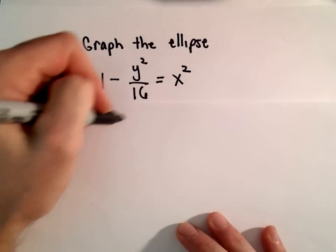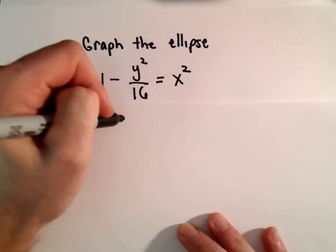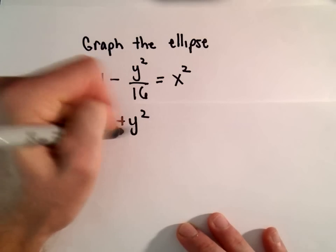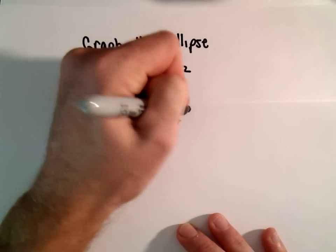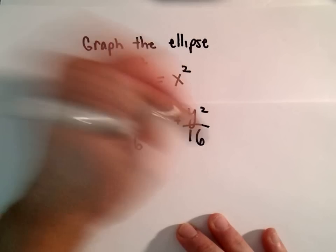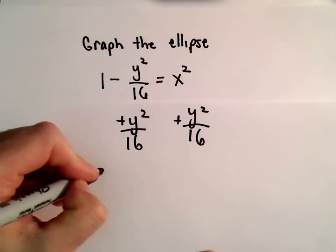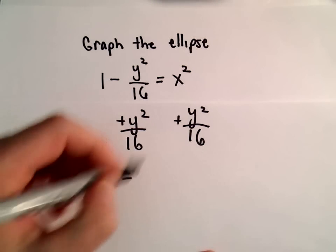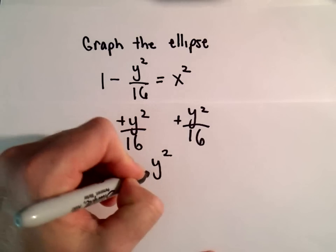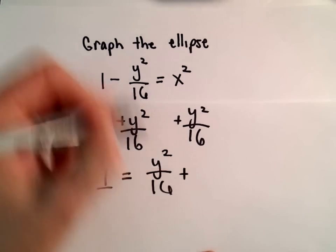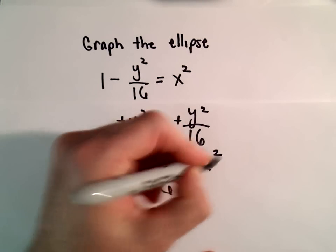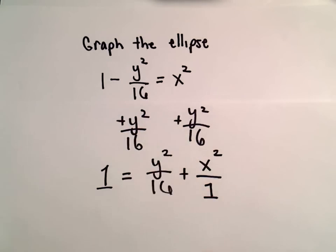So the first thing I would do is add the y squared over 16 to each side. On the left side, we would just be left with 1. On the right side, we have y squared over 16. We've got a positive x squared over there, and I'm going to write that as x squared over 1.